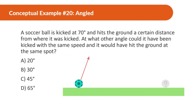A soccer ball is kicked at 70 degrees and hits the ground a certain distance from where it was kicked. At what other angle could it have been kicked with the same speed and would have hit the ground at the same spot? The answer is 20 degrees — as explained, angles that add up to 90 land at the same spot.